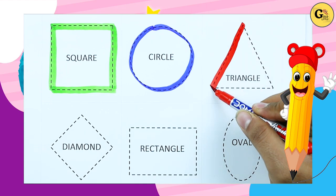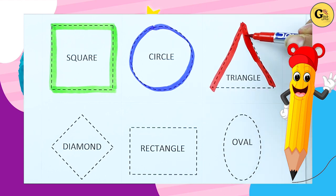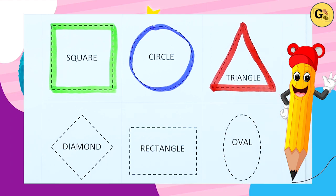One line, two line, two sliding lines. It's two sliding lines and one slipping line. It's a triangle with red color.